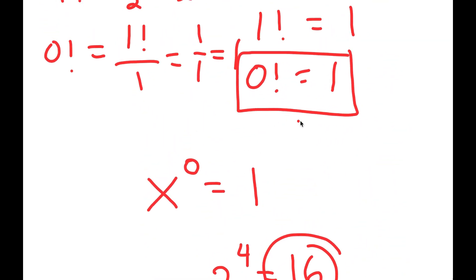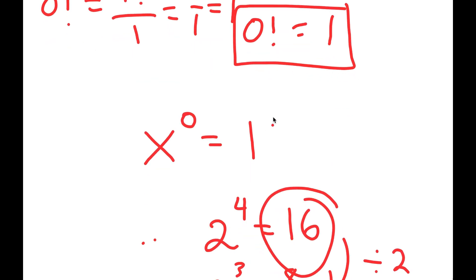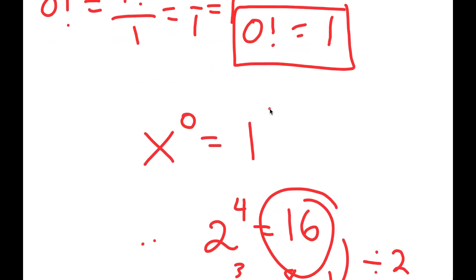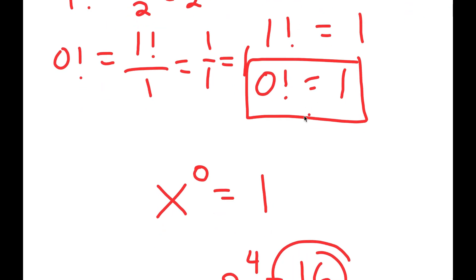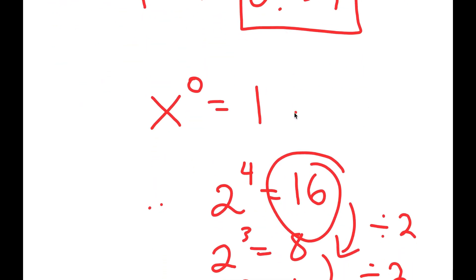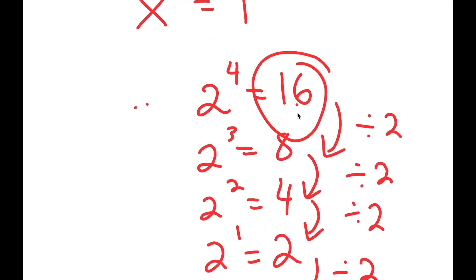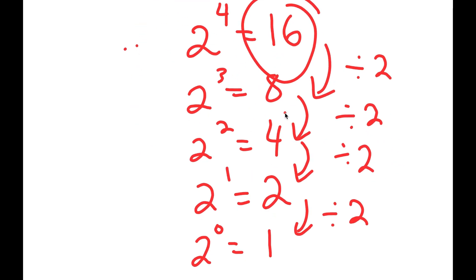So there I've proved to you not only that 0 factorial is equal to 1, but also the reason why any number to the power of 0 is equal to 1. You can use this proof — show it to your teachers, impress your friends, or do whatever you want with it. But that is the proof.